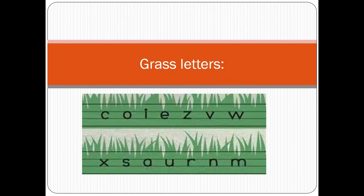Remember, students, there are five vowels: A, E, I, O, U. All these five vowels go into the grass letter position.